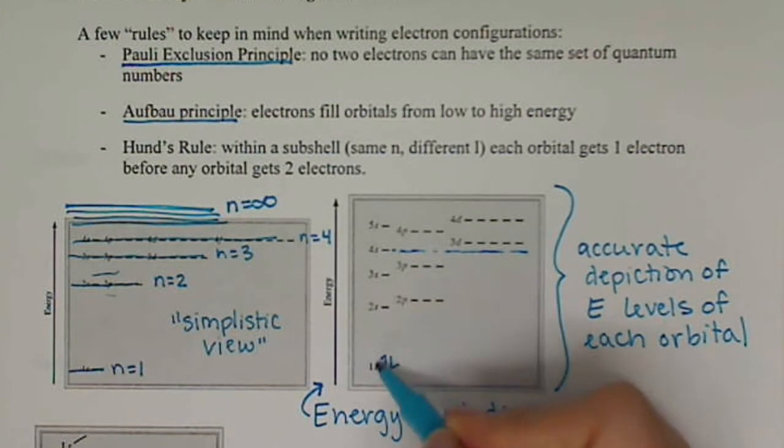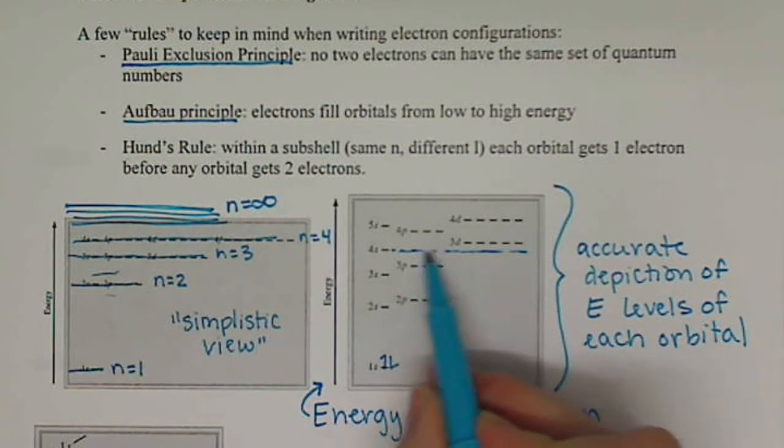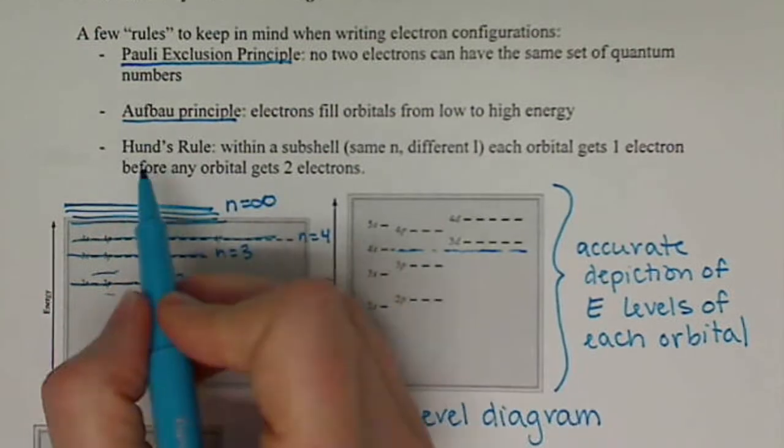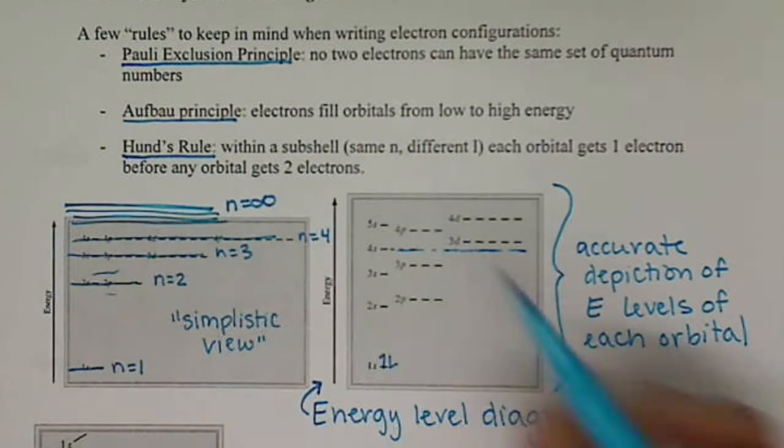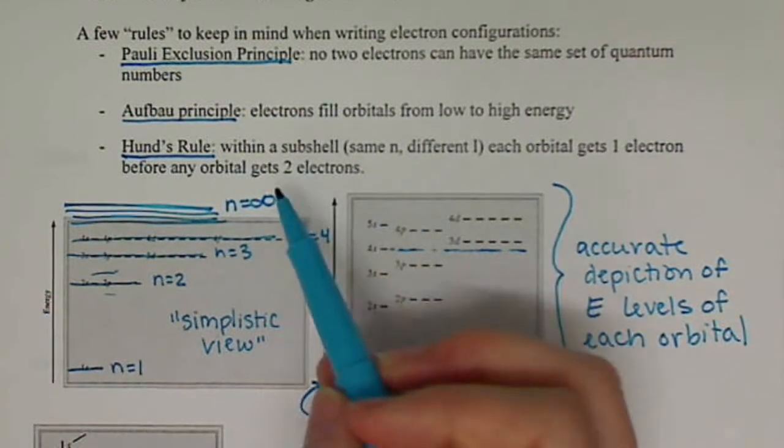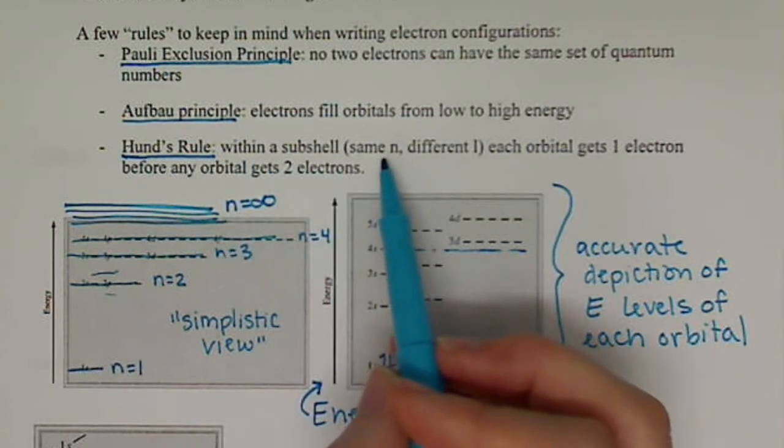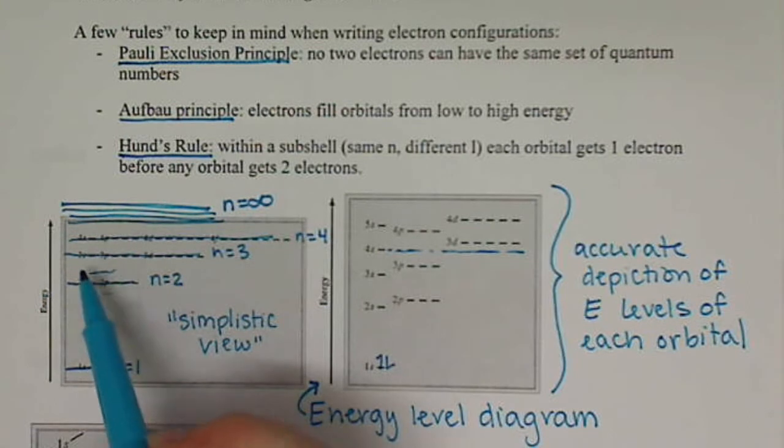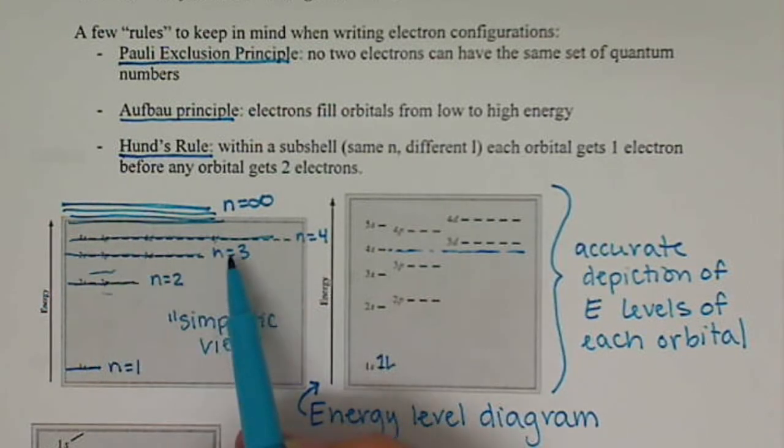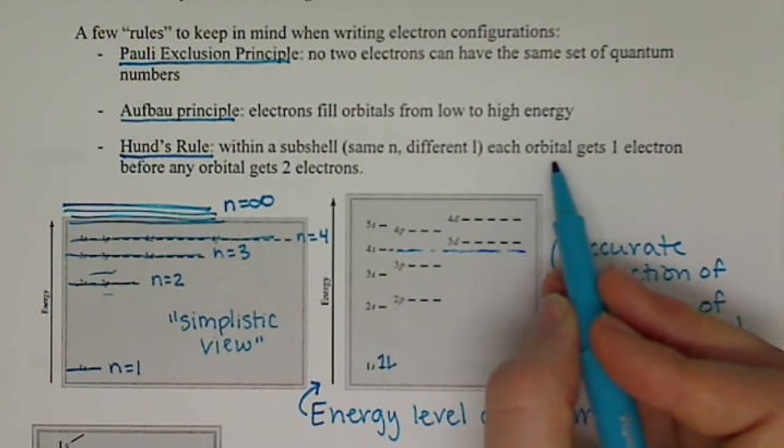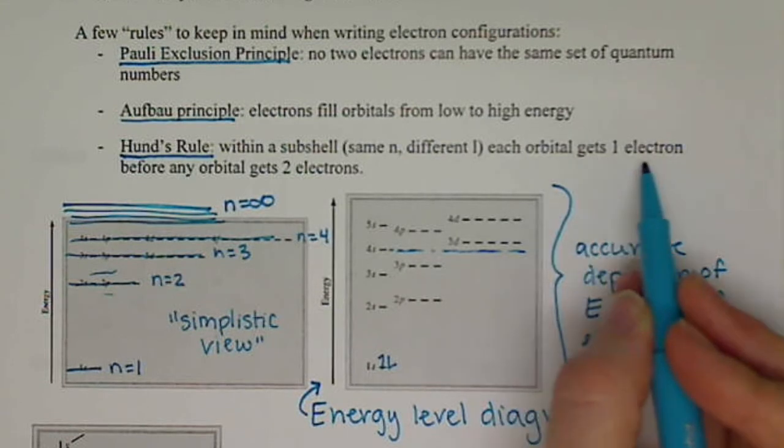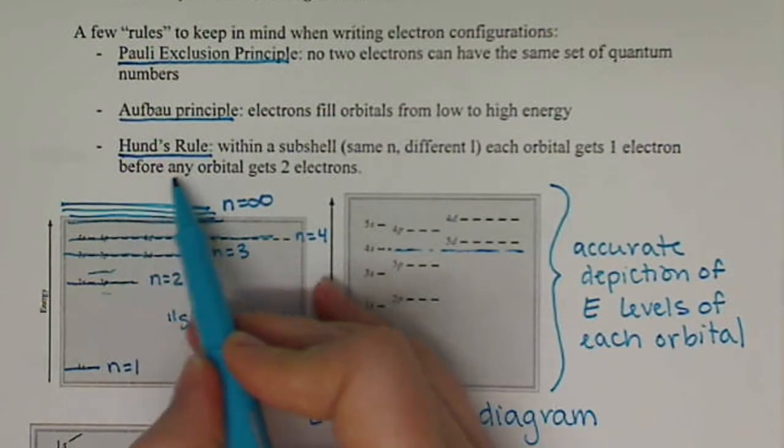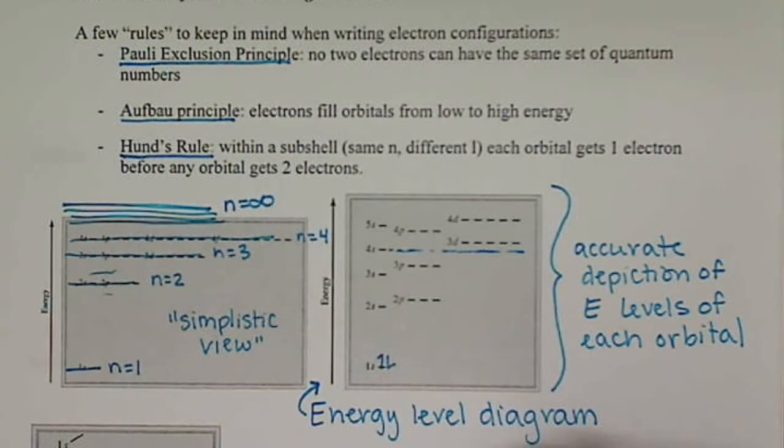Now, one thing about assigning these electrons, and it happens once we get closer in energy here, is we want to keep in mind Hund's rule. So that within a subshell, so the same n but different l, so this would be a subshell straight across, each orbital is going to get one electron before any orbital gets two electrons.